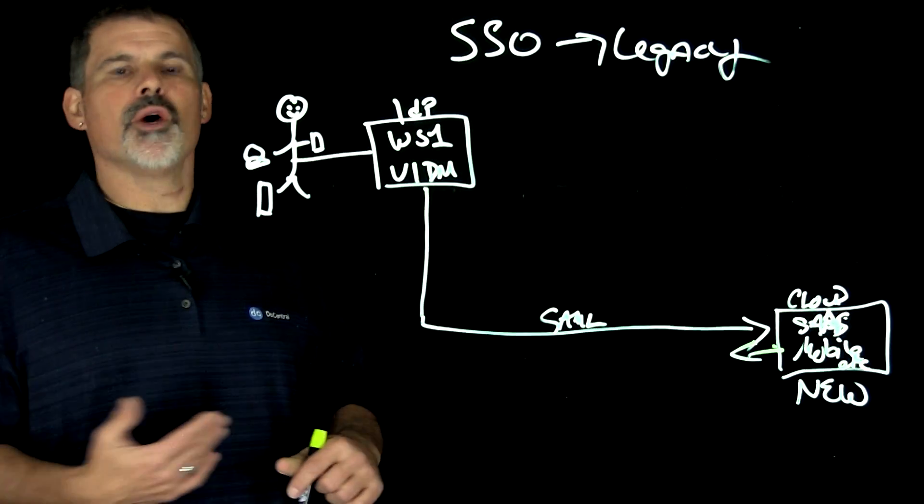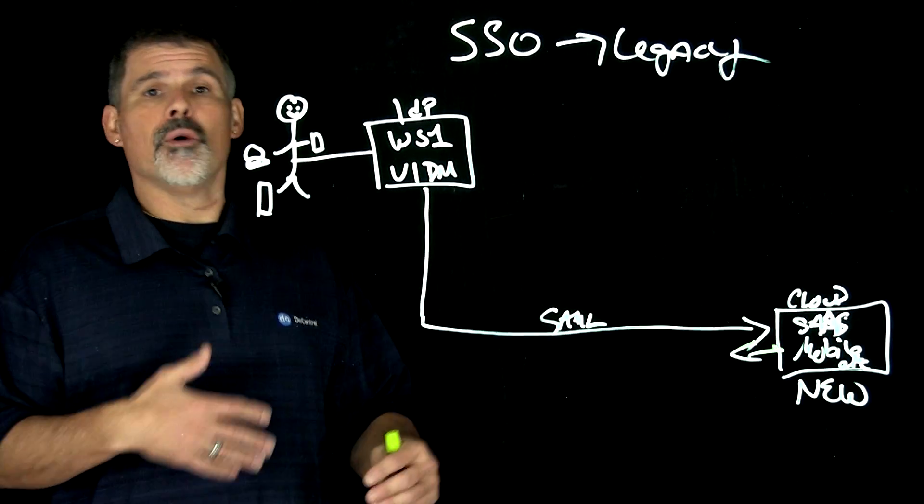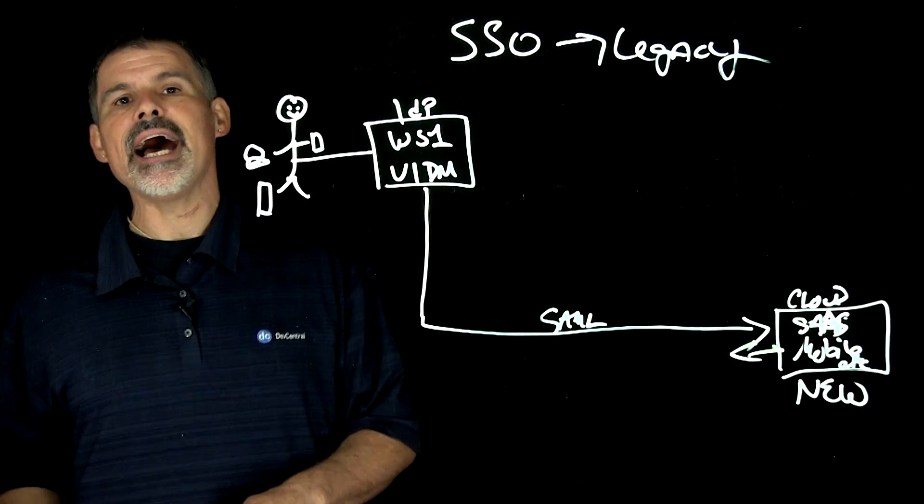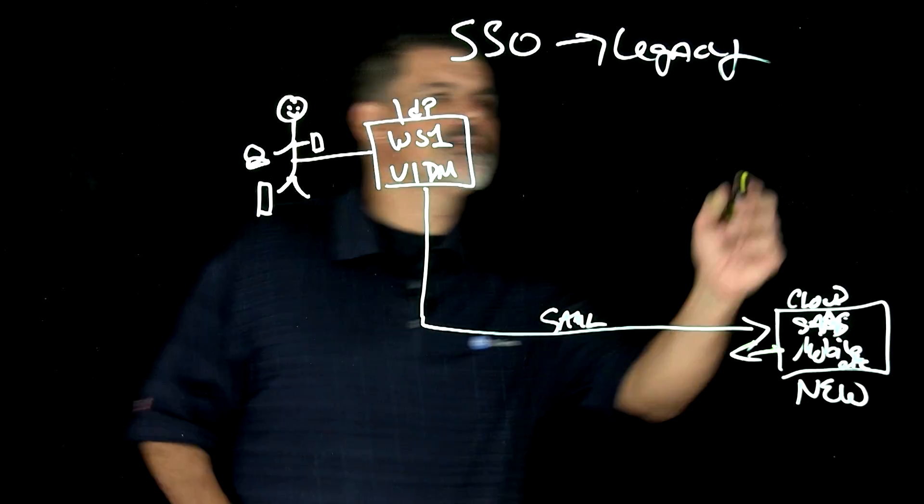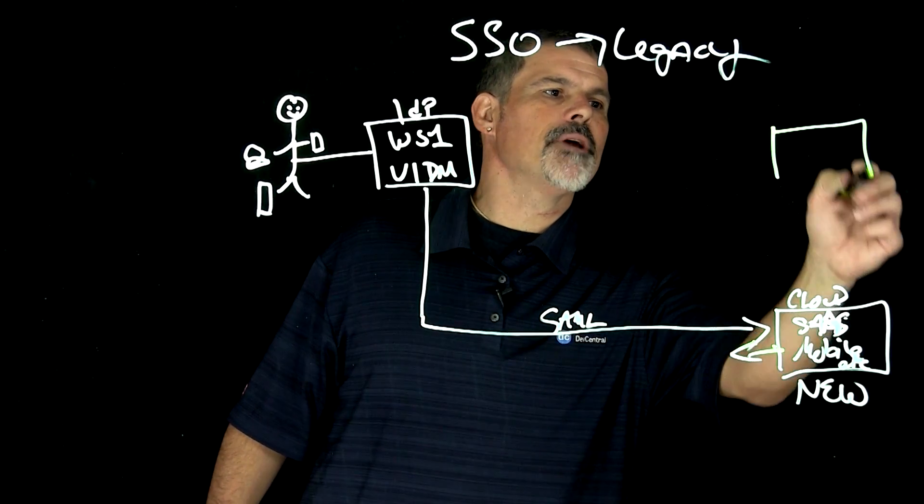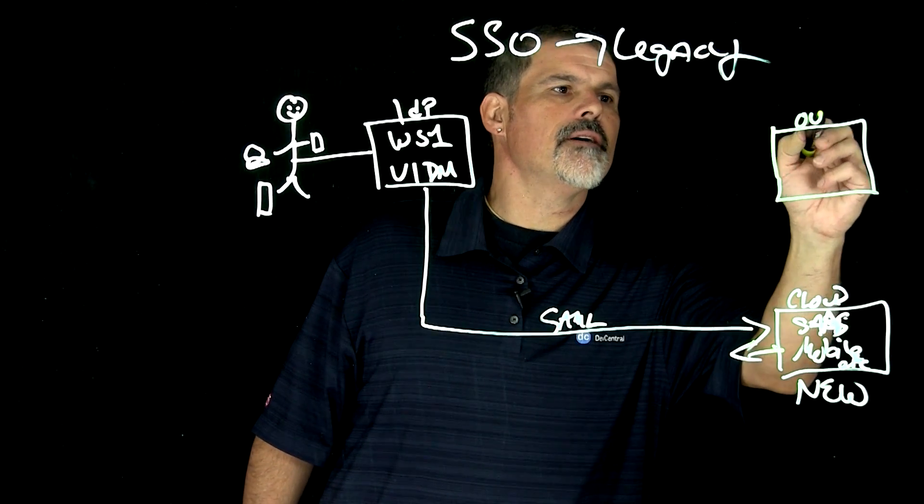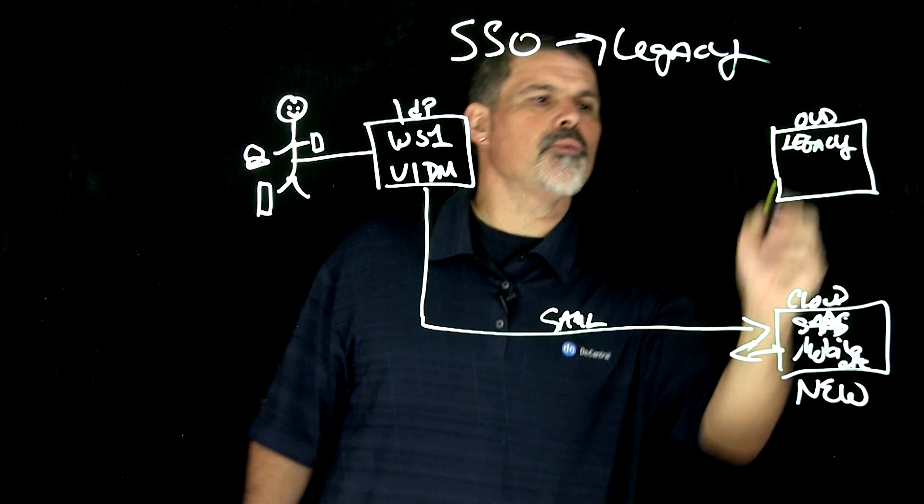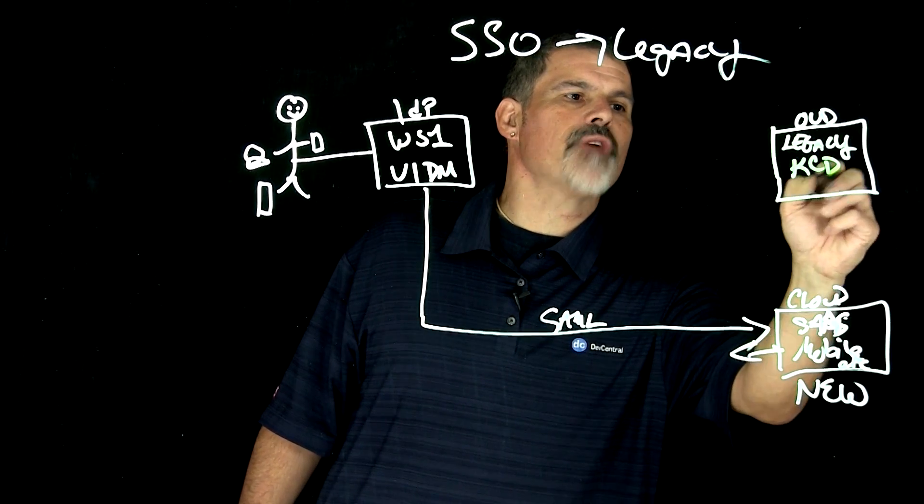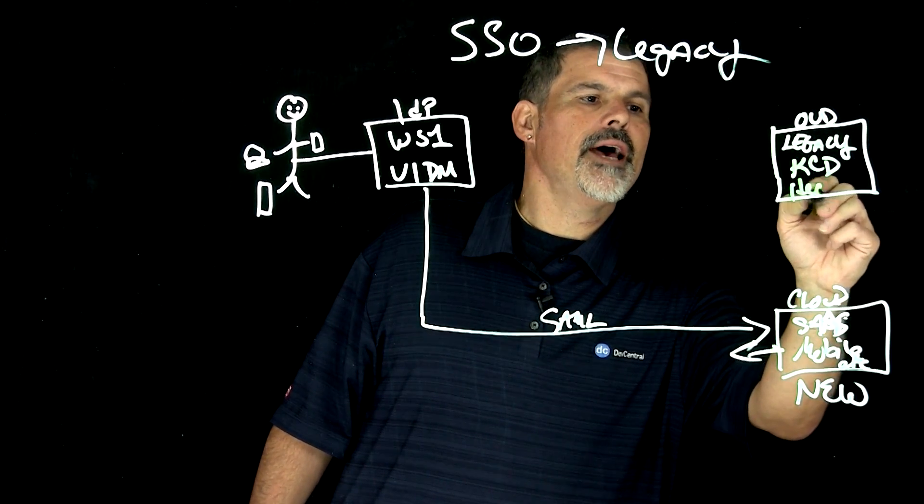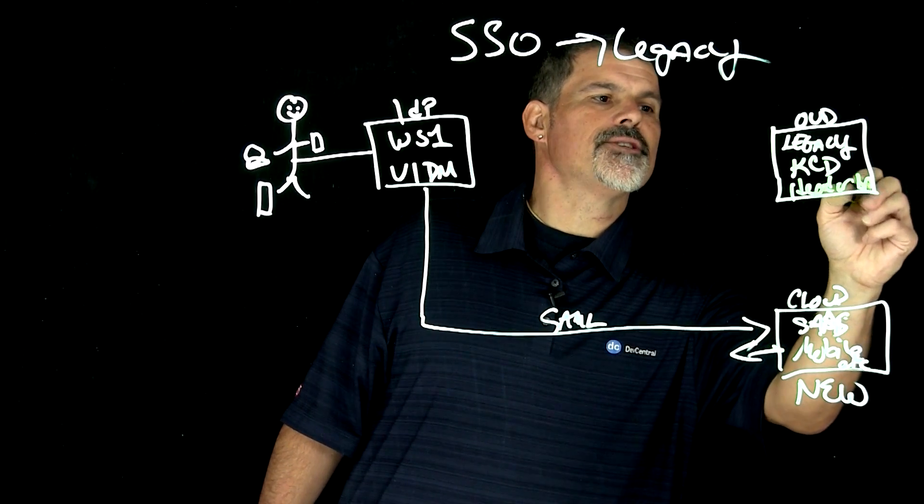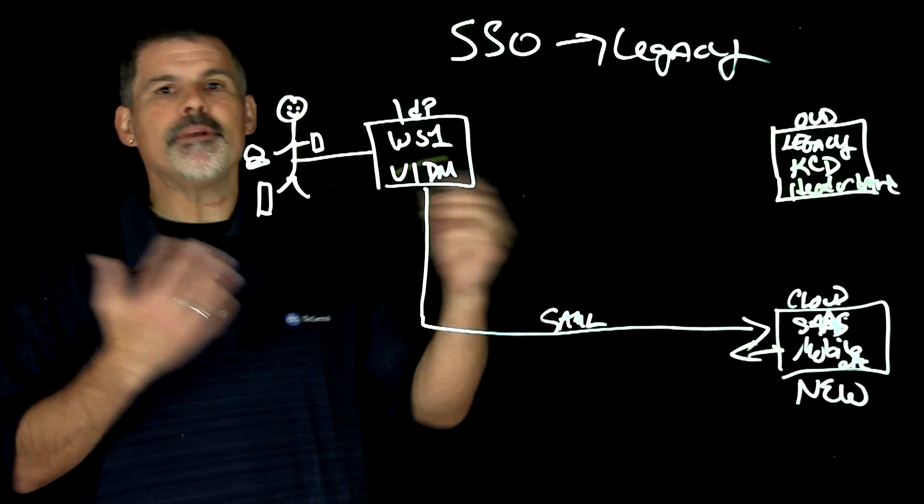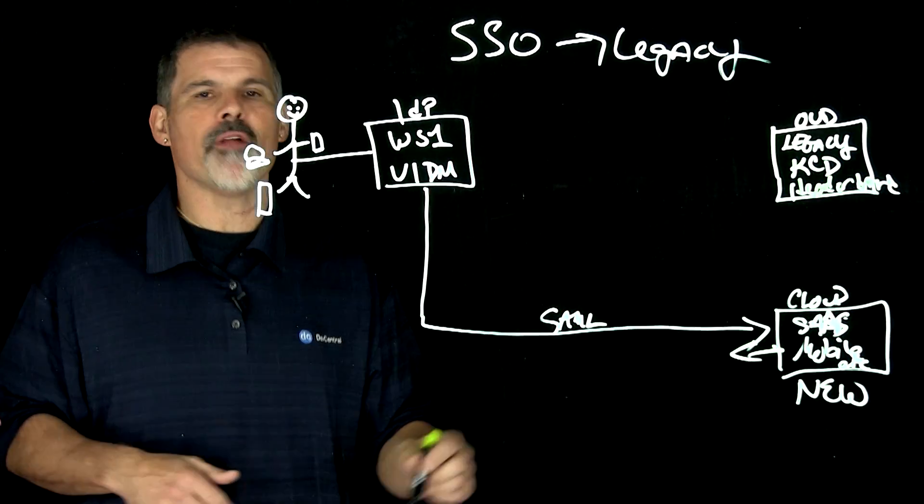But what happens when a legacy application that wasn't written for the cloud, will probably never go to the cloud, and is also not SAML enabled? See, many legacy applications that we've come to know and love authenticate with either Kerberos constrained delegation or header-based authentication via the browser. And so what happens in this instance when it doesn't support SAML?